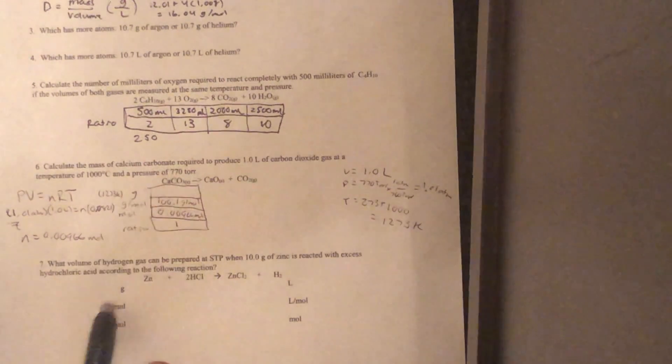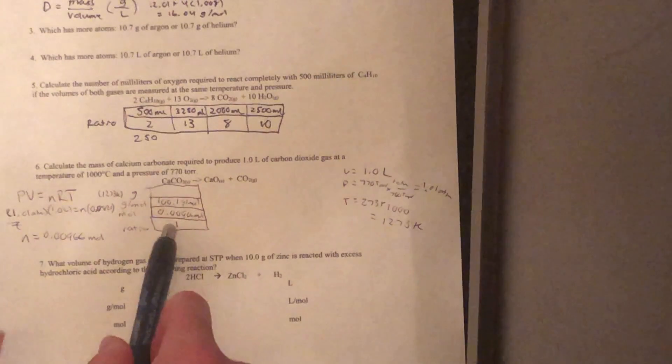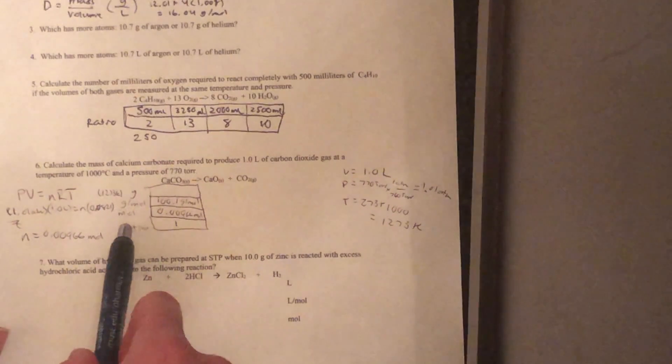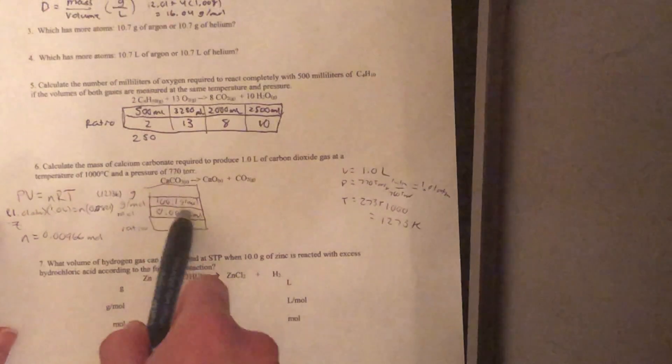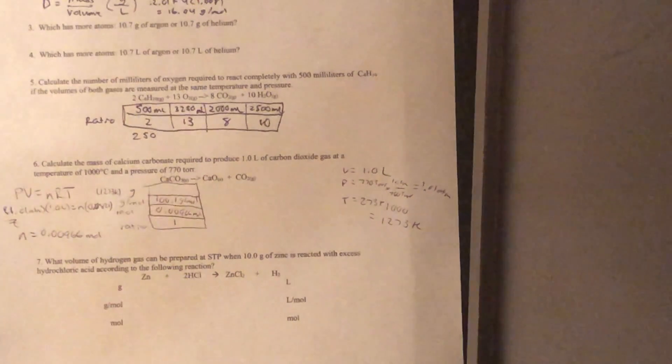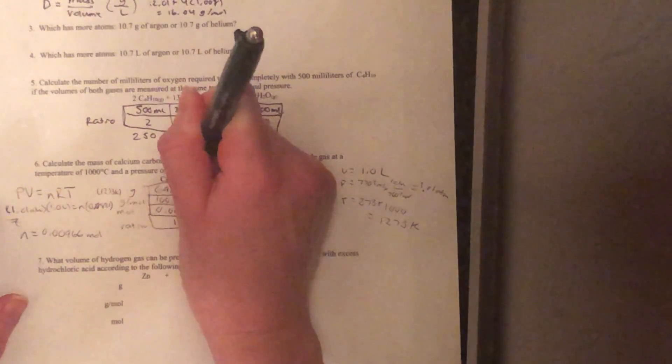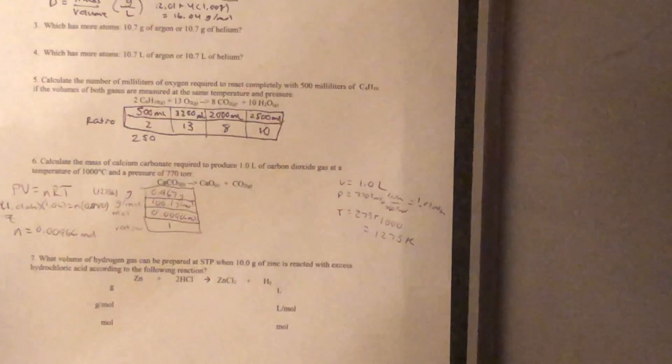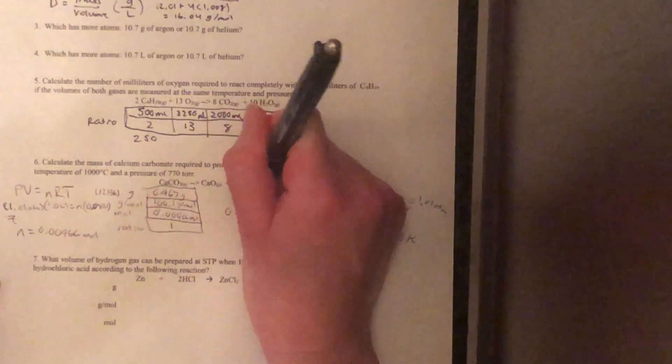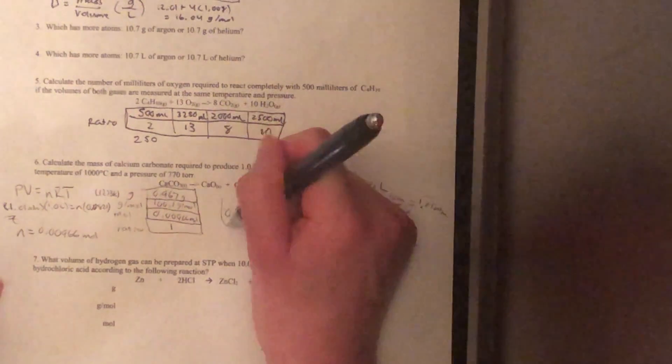So we're going to multiply as we go up the table to get our grams. 0.00966 moles times 100.1 grams per mole is going to give us 0.967 grams. And that is our answer, 0.967 grams of calcium carbonate.